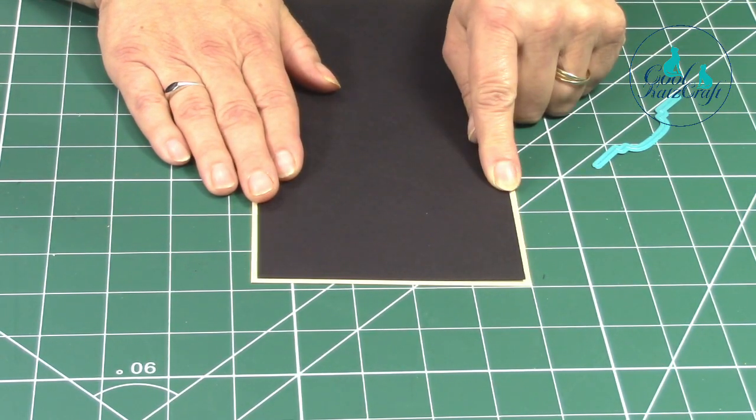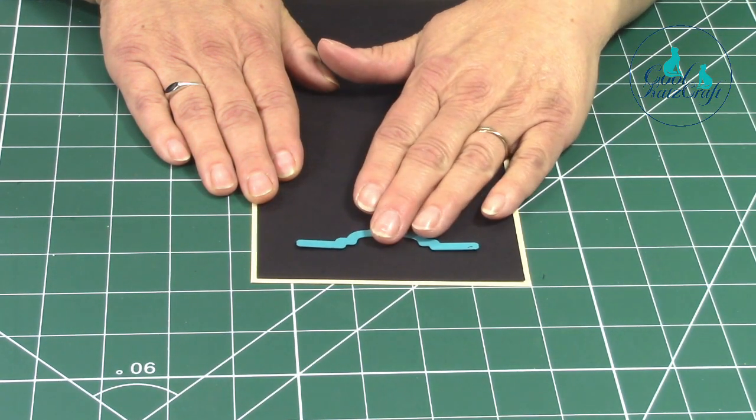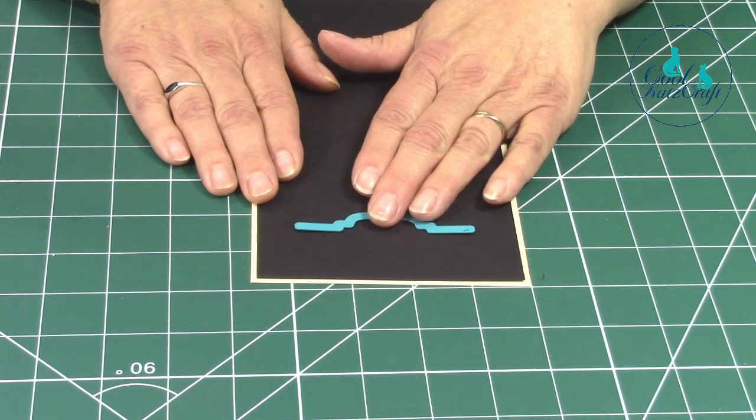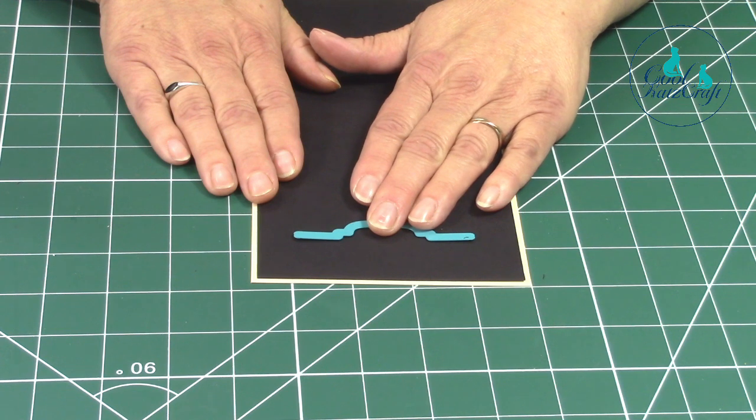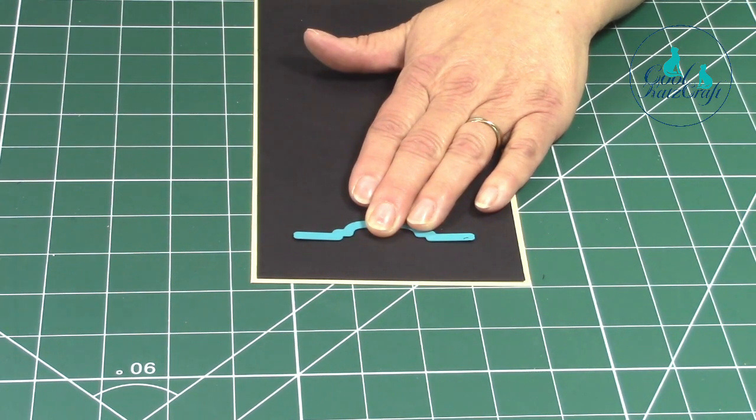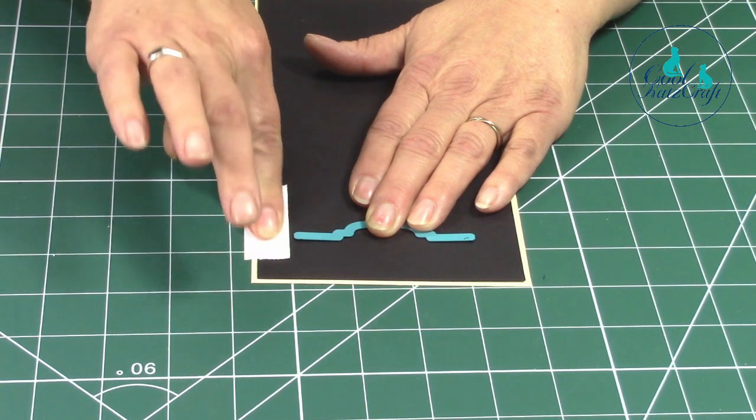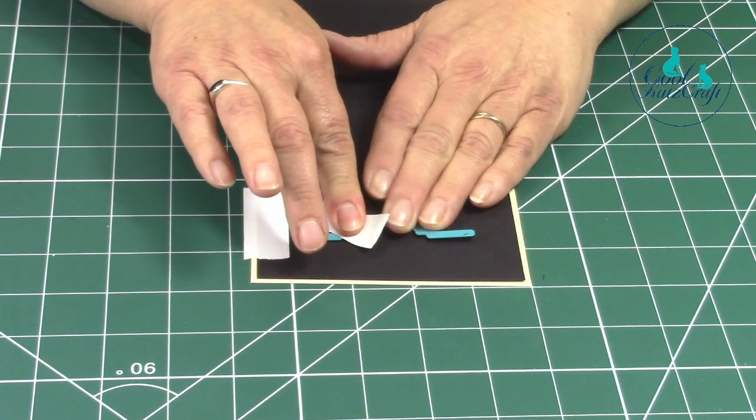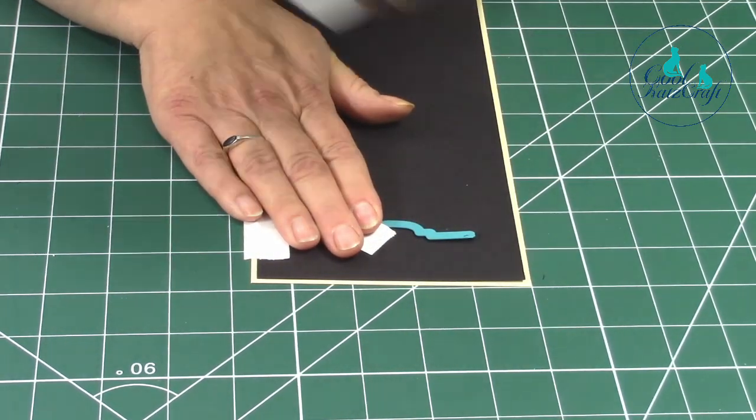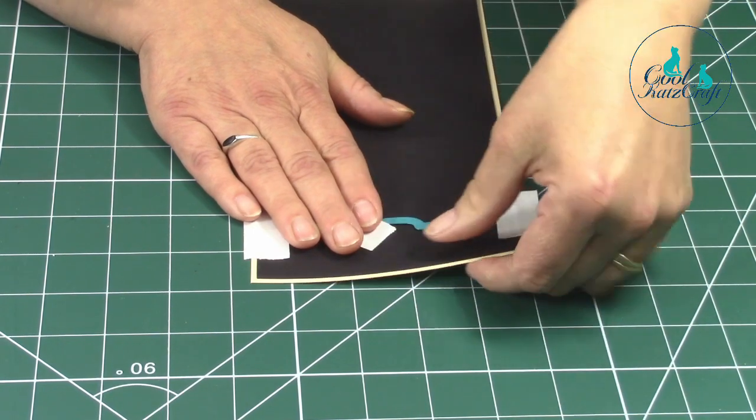I'm going to work out where I want my pocket. I think I want it about here - I haven't measured it, I'm doing it by eye. Then I want to tape everything into place so it doesn't move - the paper, the die, and the paper on that side. Then I'm going to run that all the way through the machine.